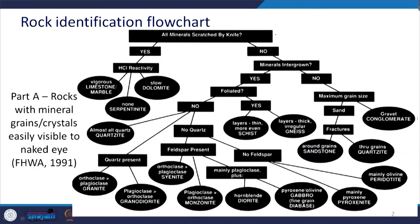As we discussed in the previous class with respect to minerals, today we have the rock identification flow chart. Here we have two parts on the basis of whether the mineral grains or crystals are easily visible to the naked eye or not. The first part deals with when they are visible. We need to see whether all the minerals are scratched by a knife or not.